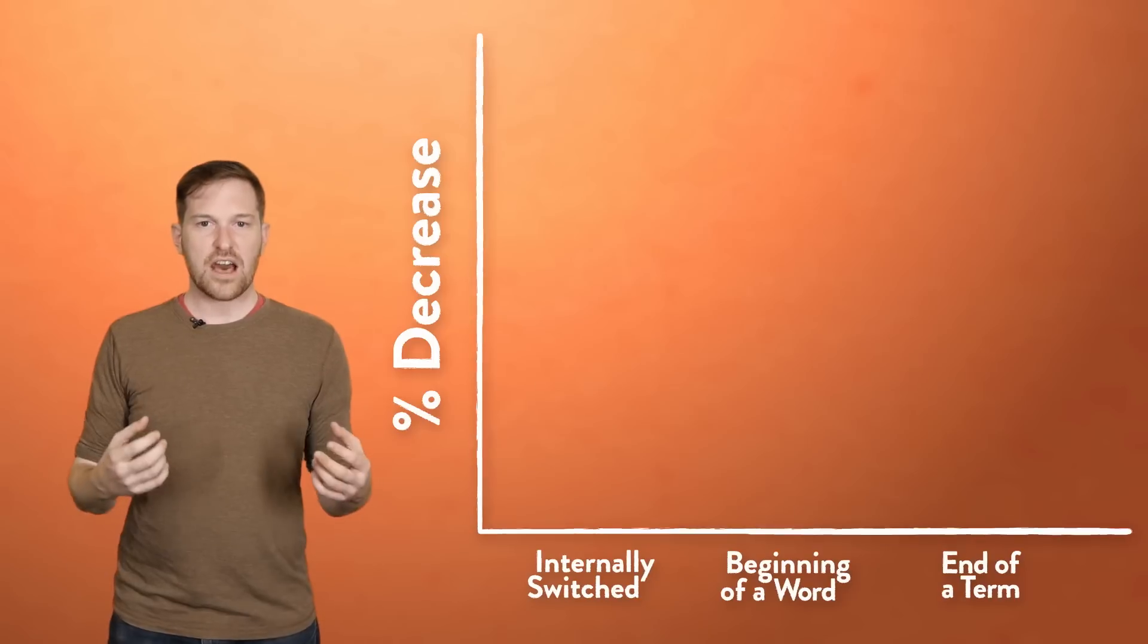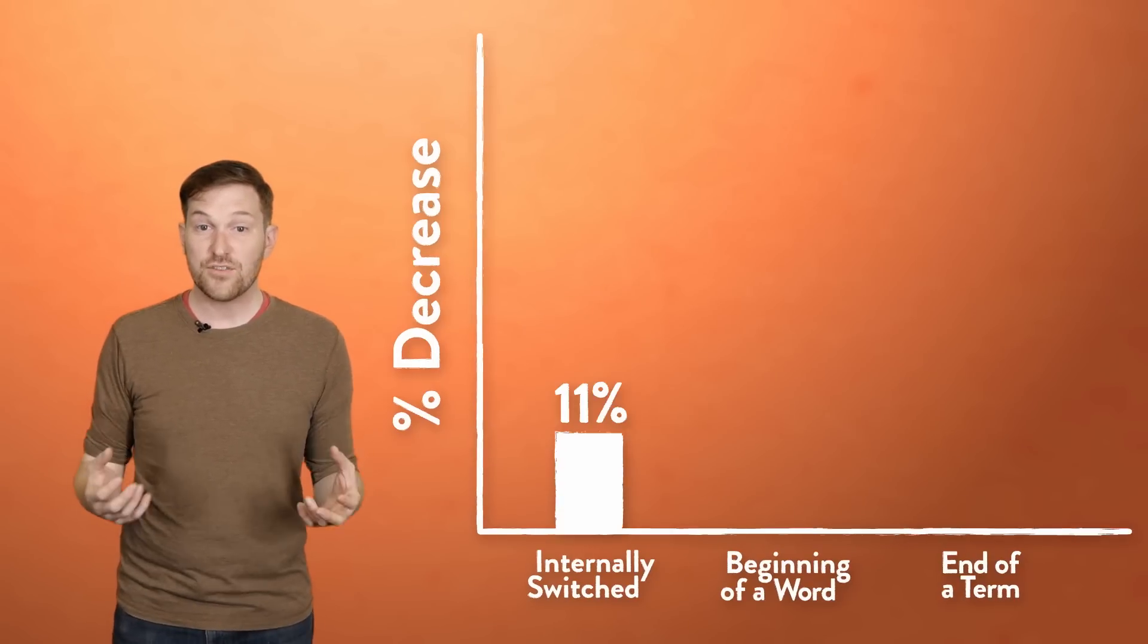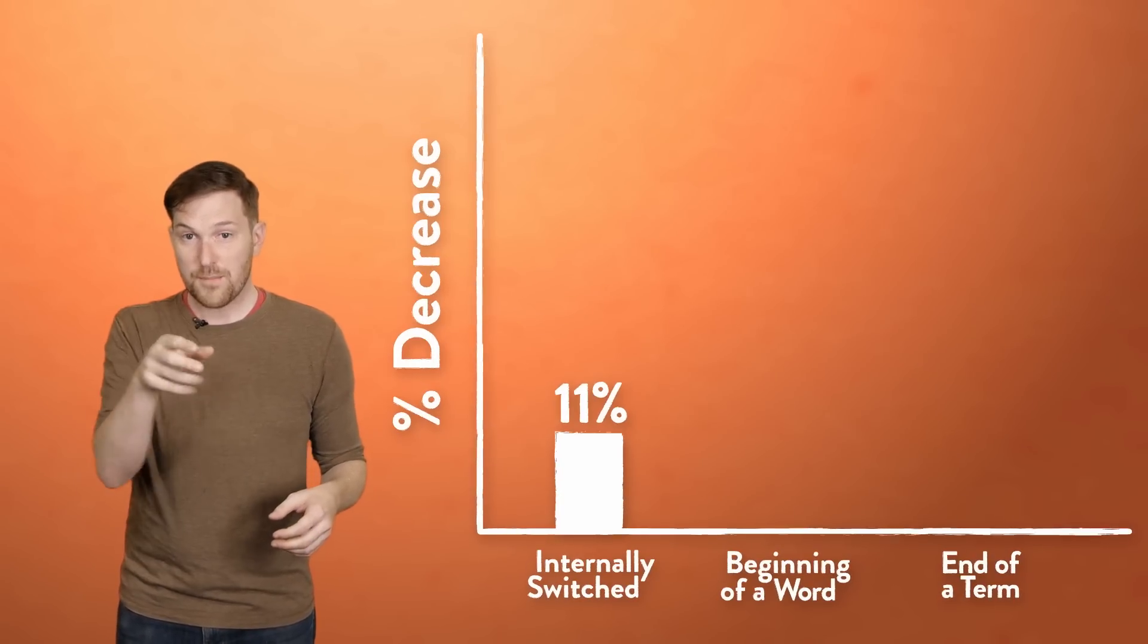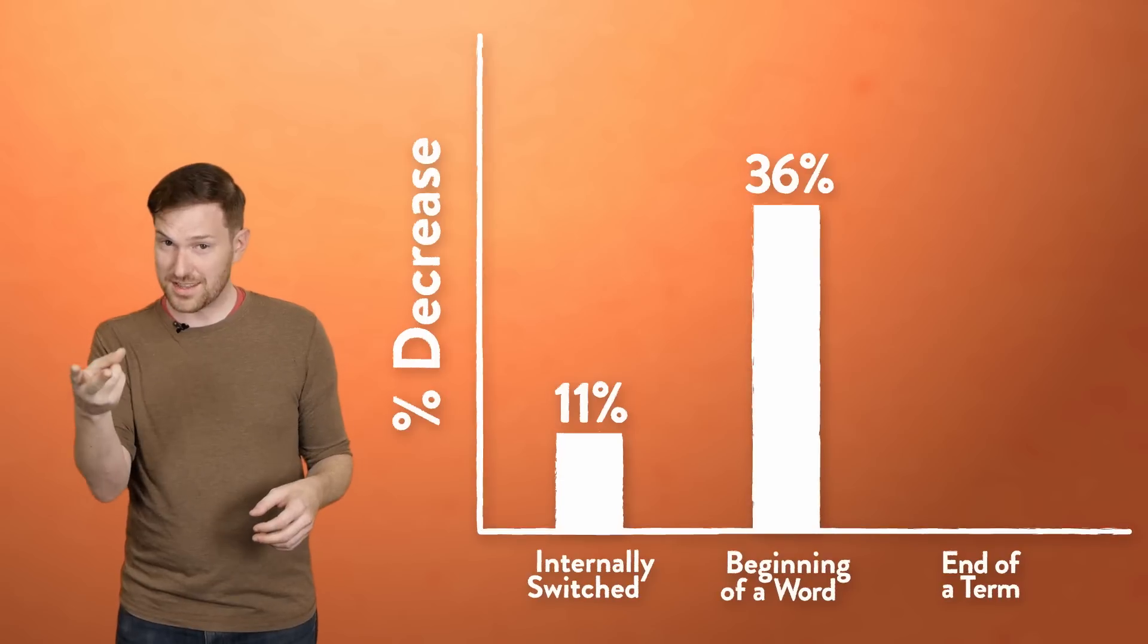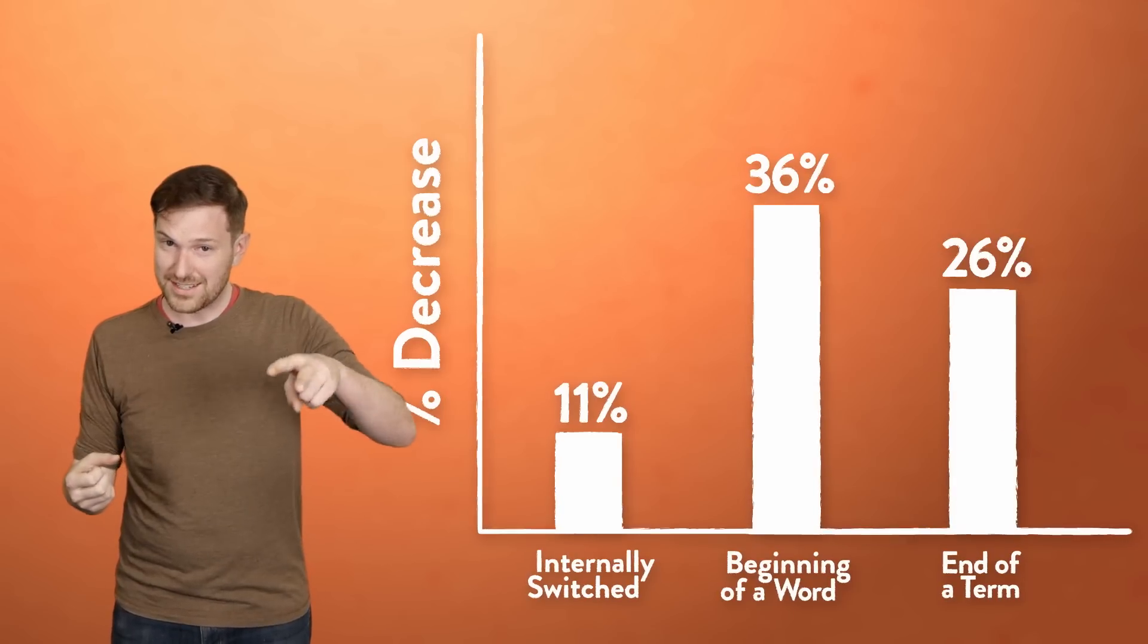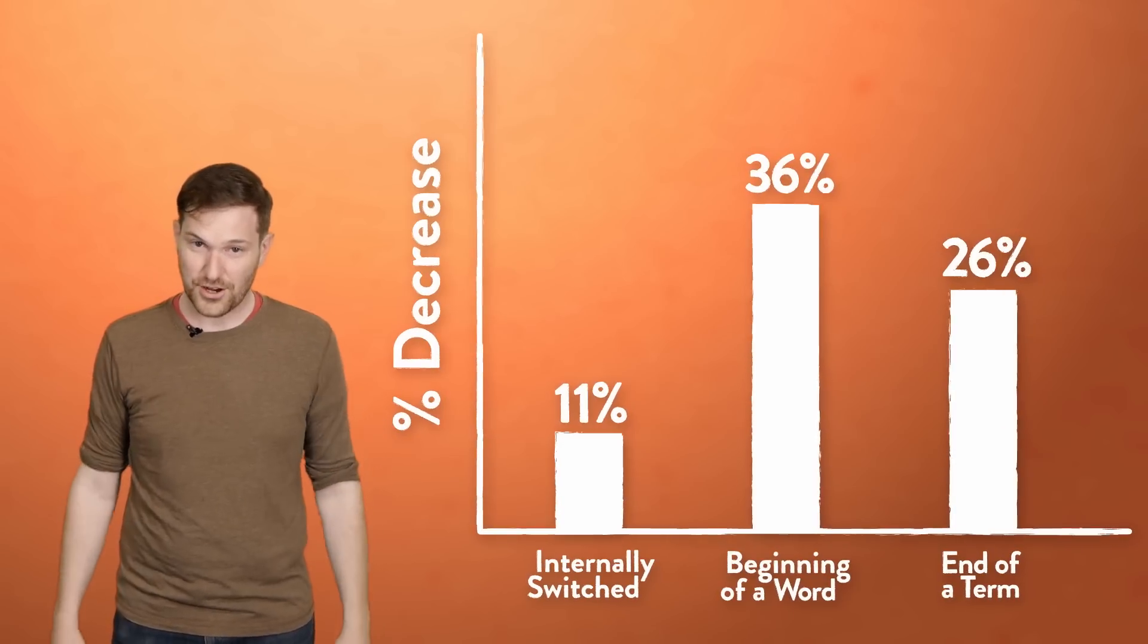First, letter order does matter in that it affects the readability of a phrase or passage. One study measured the eye movements of readers as they peruse sentences with transposed letters. You know, like switching the E and the A in sweat. They found the reading rate decreased by 11% for words with internally switched letters, by 36% if the switch was at the beginning of the word, and by 26% if it was at the end of a term.